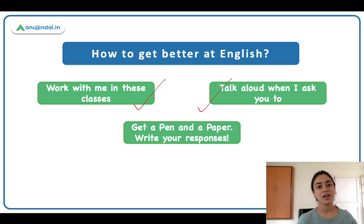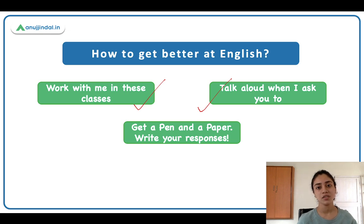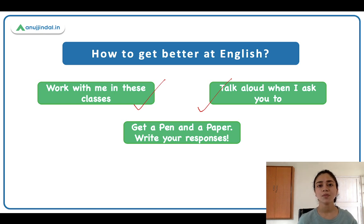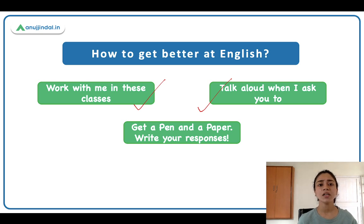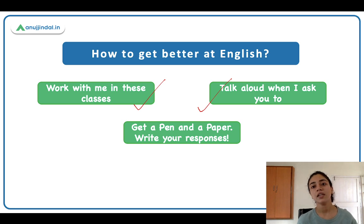Talk aloud when I ask you to. When you will be learning new words, especially the pronunciations, it will really help you if you say these words out loud two, three times, or as many times as needed. That way, you can make a note of where you are going wrong, whether you are saying the words correctly or incorrectly. It will also help you remember things better.